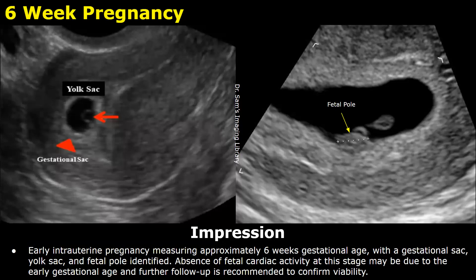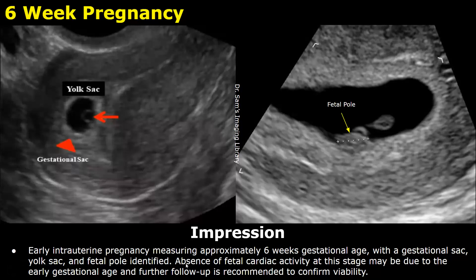Fetal cardiac activity is not yet identified at this stage. Here is the impression: early intrauterine pregnancy measuring approximately 6 weeks gestational age with a gestational sac, yolk sac, and fetal pole identified. Absence of fetal cardiac activity at this stage may be due to the early gestational age, and further follow-up is recommended to confirm viability.